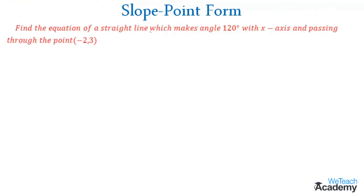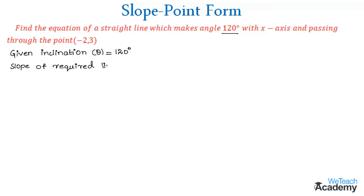We need to find the equation of a straight line which makes an angle of 120 degrees with the x-axis and passes through the point (-2, 3). The given inclination theta is equal to 120 degrees. Using this, we can find the slope of the required line given by the formula m equal to tan theta. So m equal to tan 120 degrees.